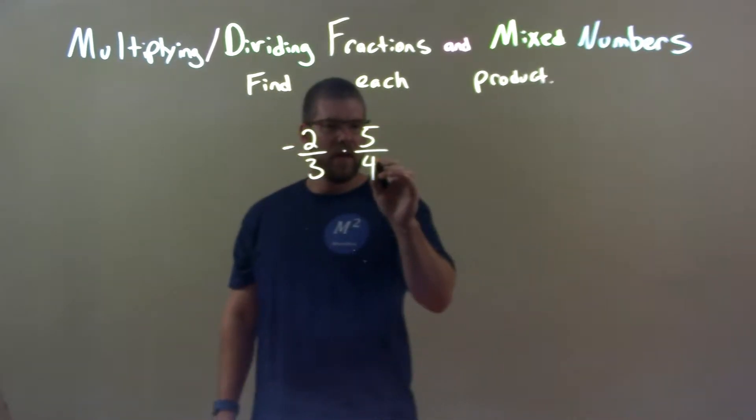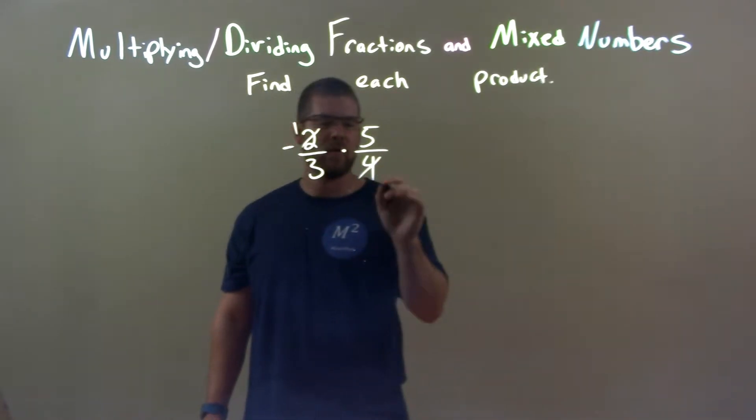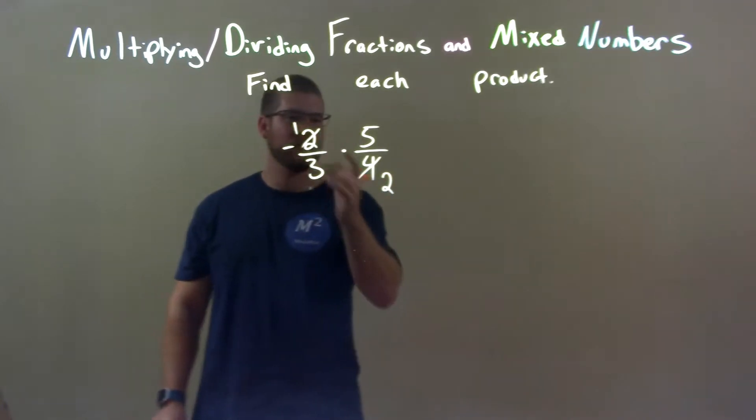Well, we know that the 4 and 2, right, they're diagonal here, they can simplify each other out. 2 and 4 simplify. There's a 1 up here now and a 2 down here. Both are divisible by 2.